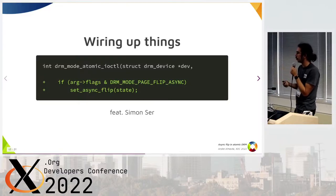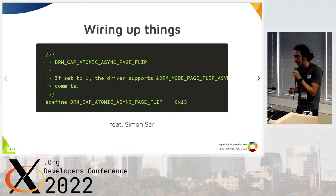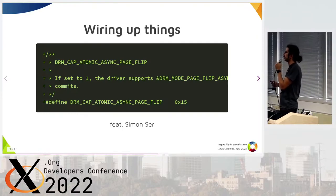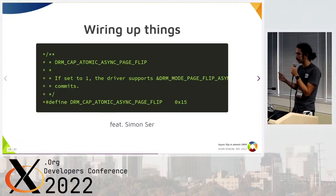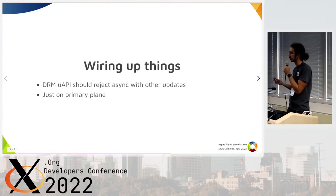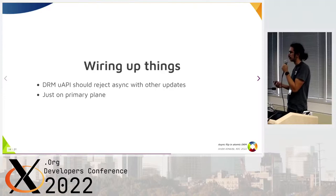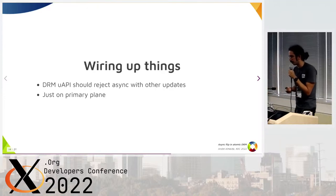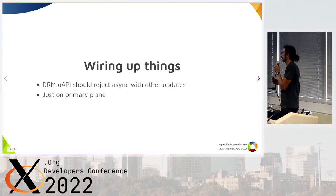Basically, we can do that on atomic — you just need to set some states, and the AMD GPU driver is ready to do the async flip. We also now have a new capability in DRM: atomic async page flip. This needs to be different from the old async capability because not all drivers are in this situation. We also figured out that DRM should reject any other change, because it seems you can't async flip and change other things beyond the frame buffer — it only works on the primary plane, which is another hardware limitation.